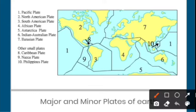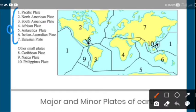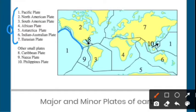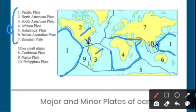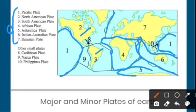There are a total of 7 major plates. The first one is the Pacific plate. The second one is the North American plate. The third one is the South American plate. The fourth one is the African plate — which includes both continent and ocean. The fifth one is the Antarctic plate, which is the southernmost. The sixth one is the Indo-Australian plate. And the seventh one is the Eurasian plate — Europe plus Asia.